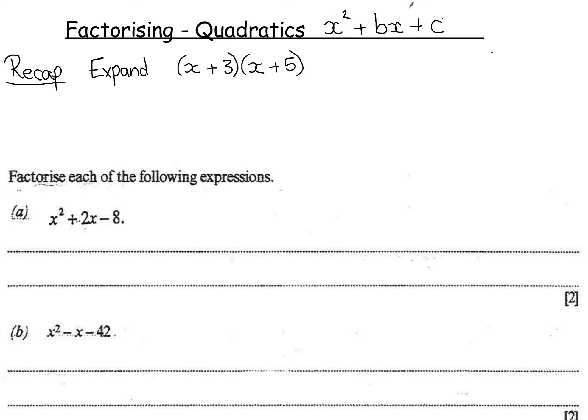And b and c stand as numbers, such as if we look at these examples we've got down here: x² + 2x, so b would be 2, and c would be minus 8.